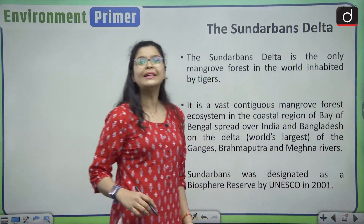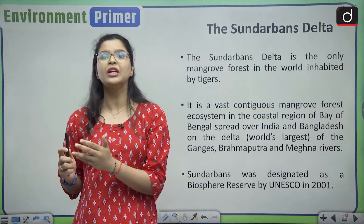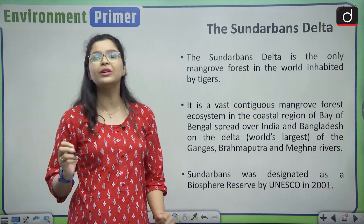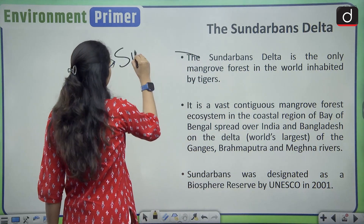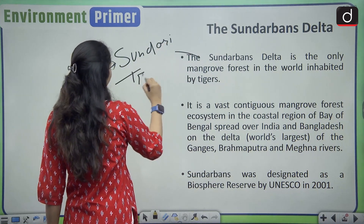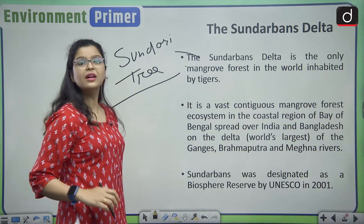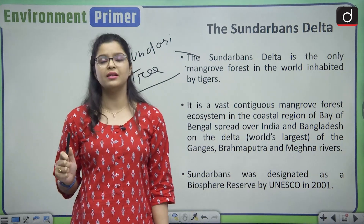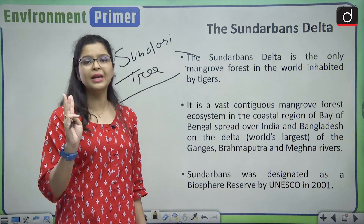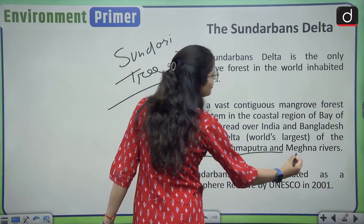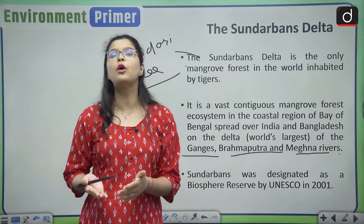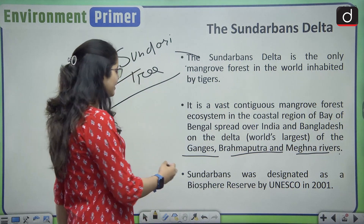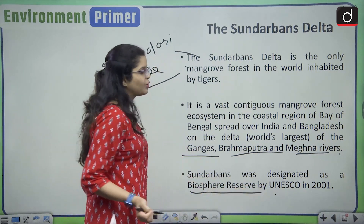The Sundarbans delta is located in India as well as in Bangladesh. It is the world's largest mangrove forest, locally known as the Sundari tree. It is also the only mangrove forest that is inhabited by tigers. The Sundarbans is a delta formed by three main rivers — the Ganges, Brahmaputra, and Meghna — and it is a UNESCO World Heritage Site, also designated as a biosphere reserve by UNESCO in 2001.